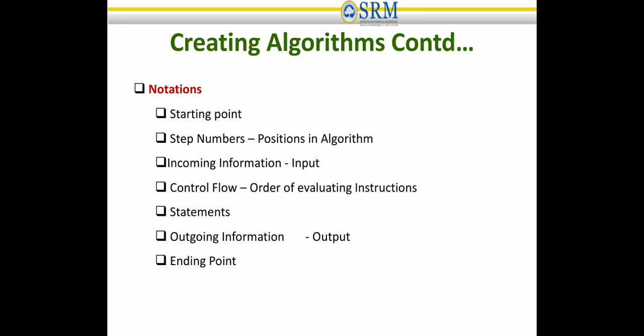Control flow refers to the order of evaluating instructions. In a mathematical perspective, operator precedence plays a vital role — for example, if you want to add A plus B and assign it to C, you need to determine which operator proceeds first. There are also statements: any number of statements can be given in an algorithm with respect to your control flow. Outgoing information, or output, is the solution of the problem attained after executing the algorithm.